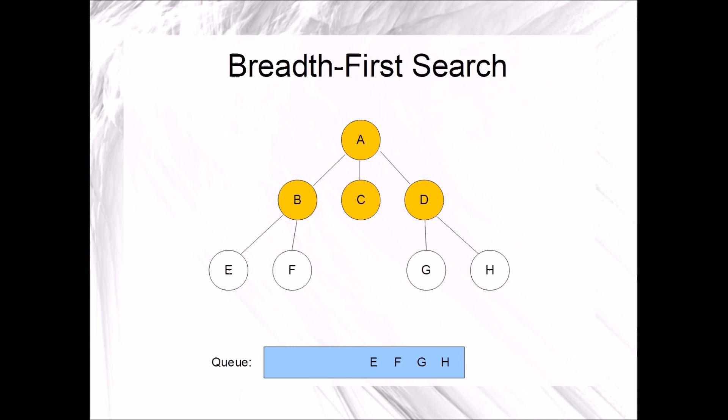Since the queue is not empty, we will have another iteration. That iteration begins by dequeuing E and marking it. Next, we will enqueue all adjacent unmarked vertices. There are none.